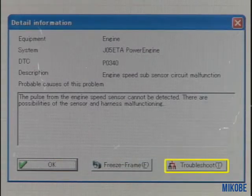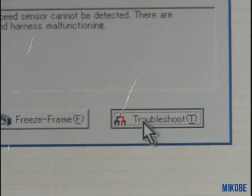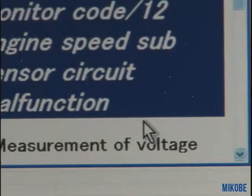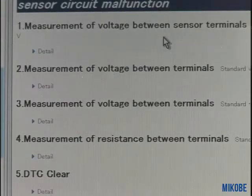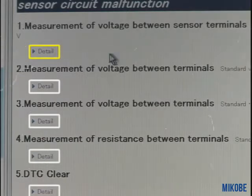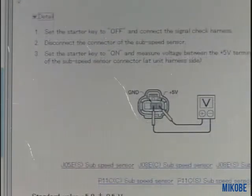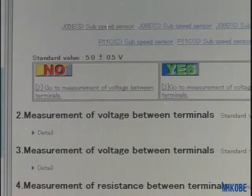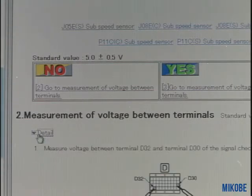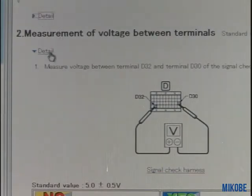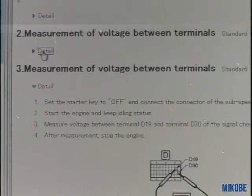If we move to the trouble diagnosis flow, click this button. Following the displayed flow, advance the trouble diagnosis in numeric order. When you click the detail button, the detail of each procedure — such as the measuring method — will be displayed, so please follow the instruction. By the result of the trouble diagnosis, the item number that should be checked next is shown. Repeating this procedure, you can specify the cause of the trouble.